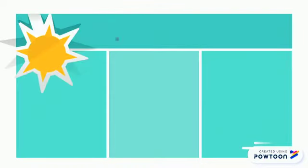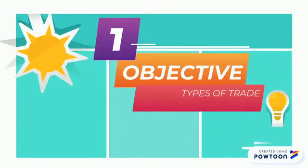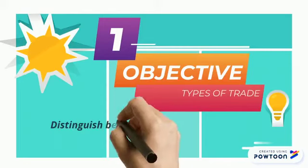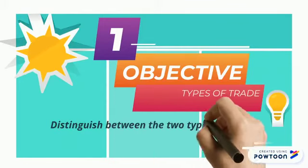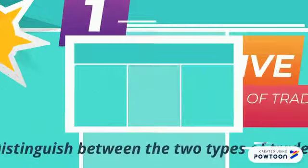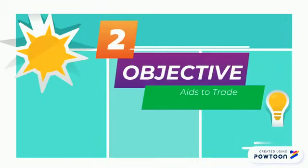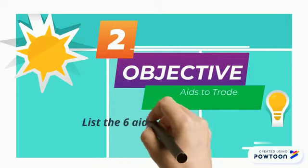Here are our objectives for today. Objective 1, we will look at the types of trade. Objective 2, we will look at the aids to trade.